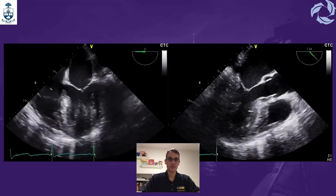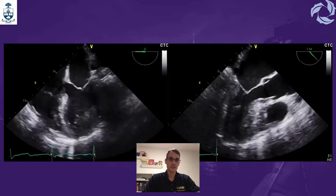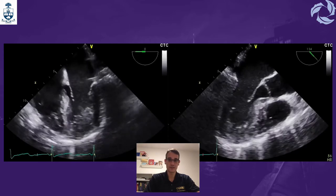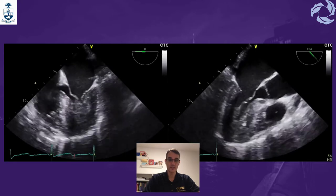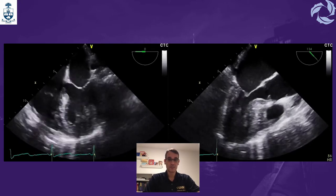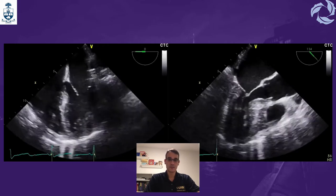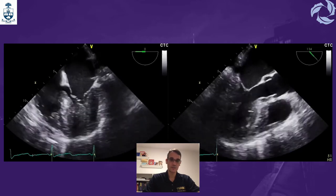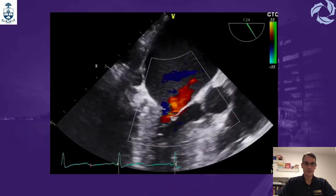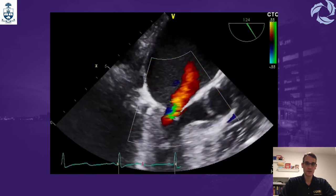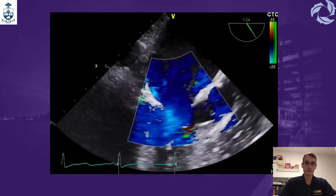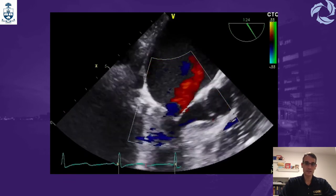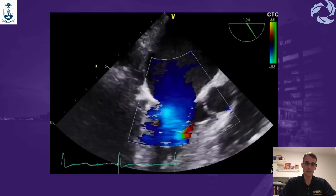Intraoperatively, we confirmed severe asymmetric septal hypertrophy involving the basal, mid anterior, anterolateral, and anteroseptal walls, with a maximum septum of 1.6 cm. We could not visualize SAM in this case. However, the anterior mitral leaflet was thickened distally with mal-coaptation at the center. With color flow Doppler in the four-chamber and long axis views, we identified a centrally directed jet — mild to moderate MR, centrally rather than posteriorly directed as would be expected with classic SAM. We checked for LVOT flow acceleration and found none at that time.